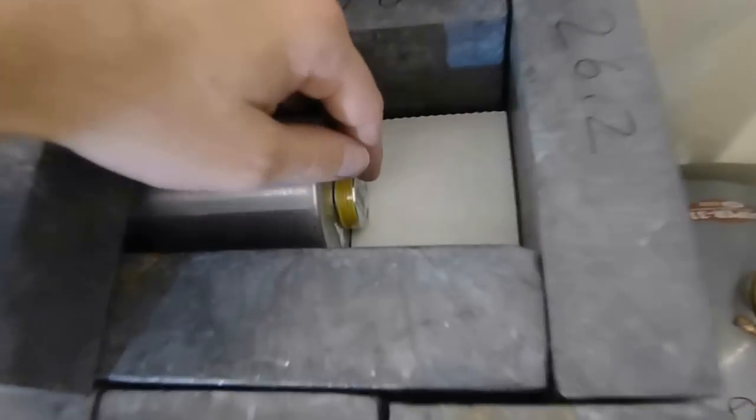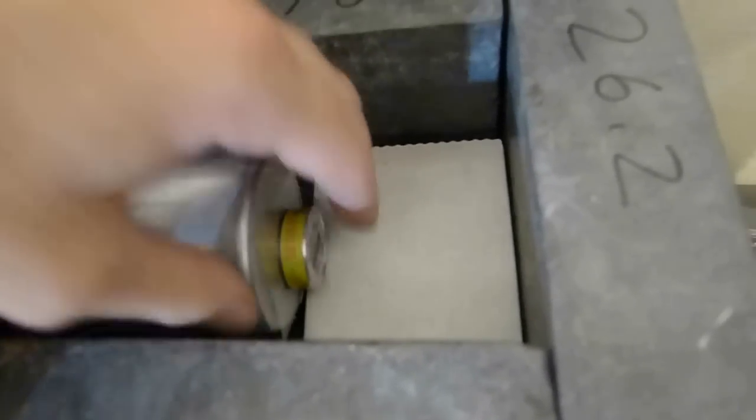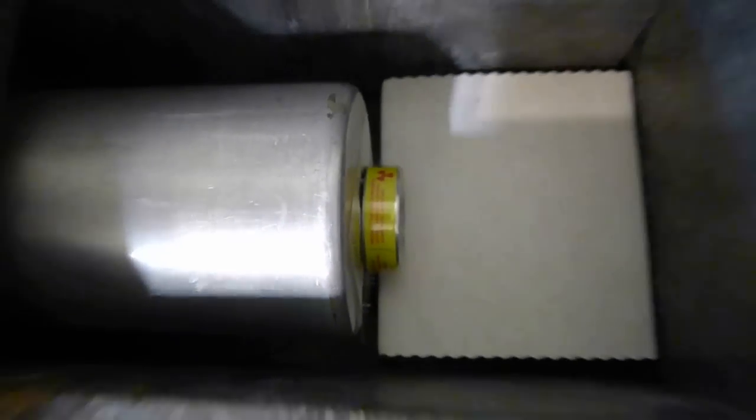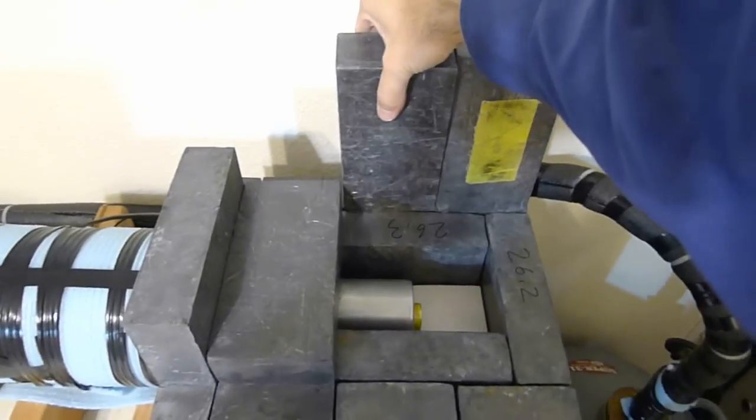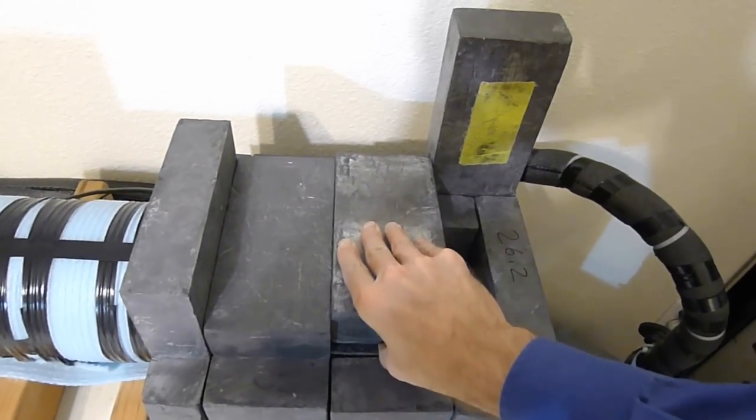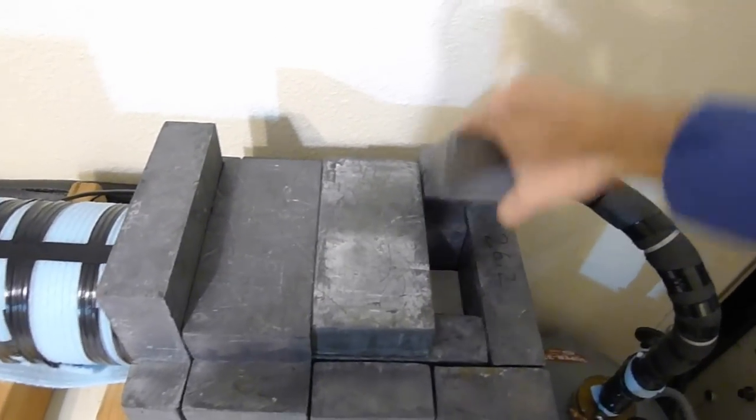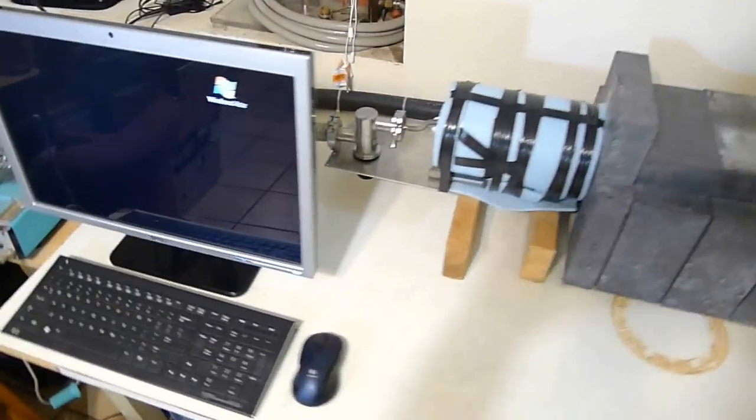So we're just going to stick this polonium source down there. Alright, just like that. Right up against the end of the crystal. Just like so. And we are ready to run our experiment and look for these gamma rays. So I will proceed to crush my fingers under some very large pieces of lead. And we are ready to go.